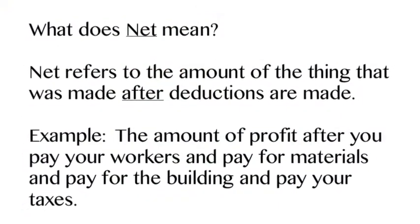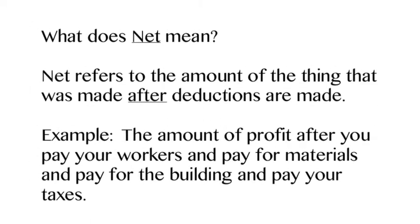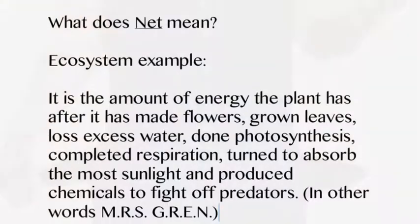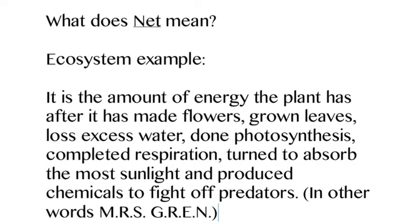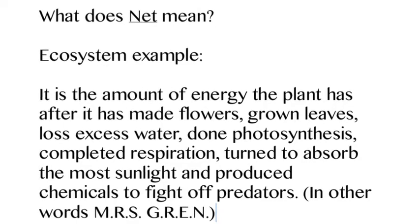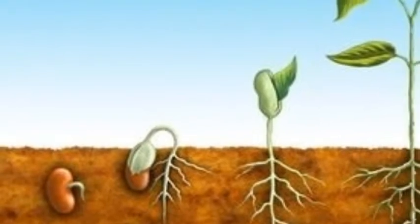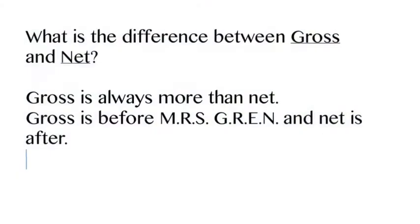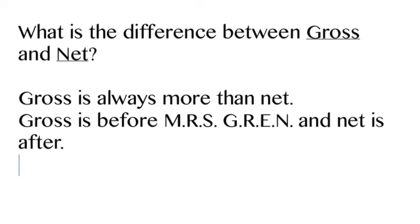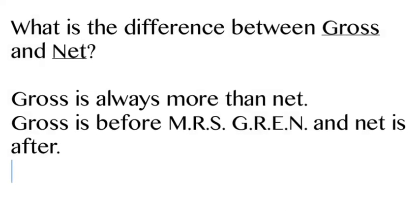In contrast, what does net mean? Net is when you take all your deductions out — like your paycheck. If you own a business, you've got to pay for your workers, your materials, the building, taxes. And when you're done, you may have a lot of profit or you may not have much — that's your net profit. In an ecosystem, it's really the amount of glucose minus the amount of respiration. Gross is always more than net. Gross is before respiration and net is after.